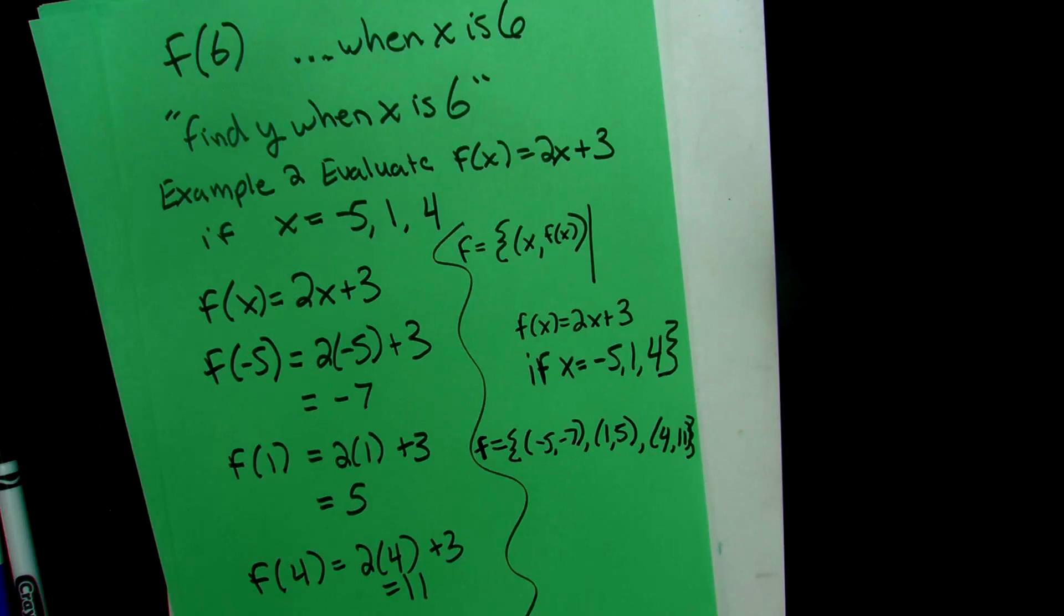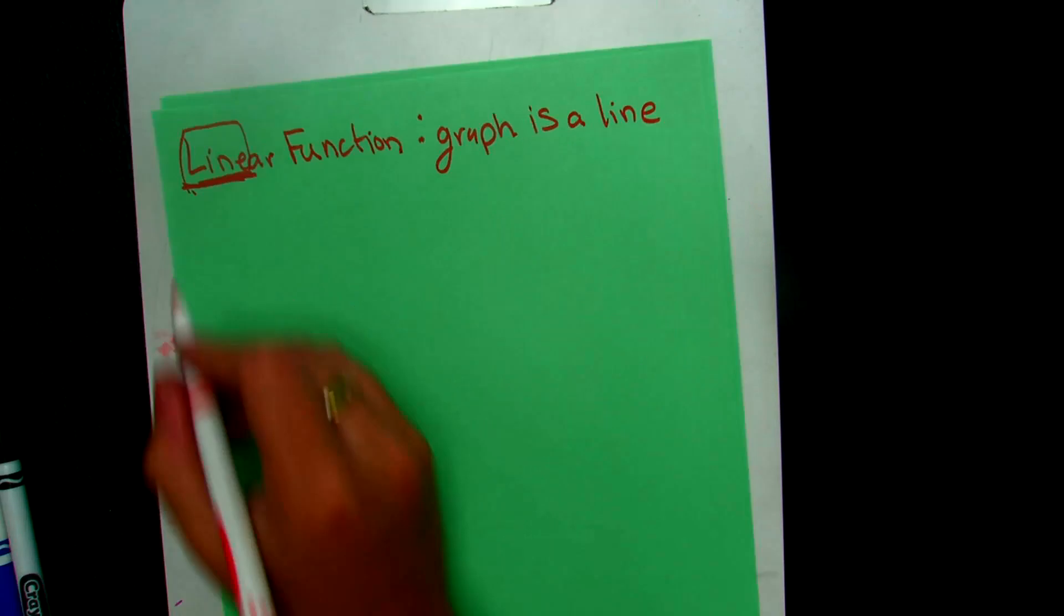It also means that the function contains an infinite number of ordered pairs. One such function that is like that is called a linear function. So a linear function is a function whose graph forms a line. So notice that the word line is in linear. That is definitely a hint on what a linear function is. So to graph a linear function, we get several ordered pairs by substituting values of x and then plotting those.